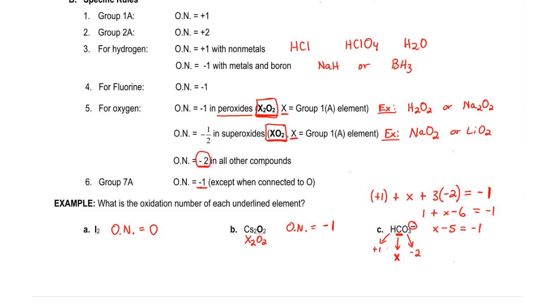We still want to find X, so we add five to both sides. So the oxidation state of carbon would be plus four.